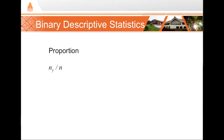Comparatively to continuous data, working with binary data is pretty simple. We can't compute its location, dispersion, or shape. Our binary choices are only yes or no. Therefore, the only meaningful descriptive statistic is proportion — and that is the number of yeses or nos out of the total number, n.